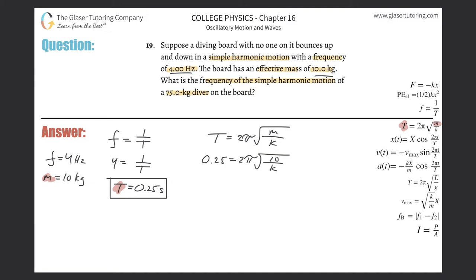So let's divide out the 2π from both sides. So it's going to be 0.25, that's the period divided by parenthesis 2π. And we'll get a value of about 0.0398. And that's going to be equal to the square root of 10 over k. Now we've got to solve for k, so we've got to get rid of that square root. So that means we have to square both sides. So 0.0398 squared is going to be equal to 10 over k.